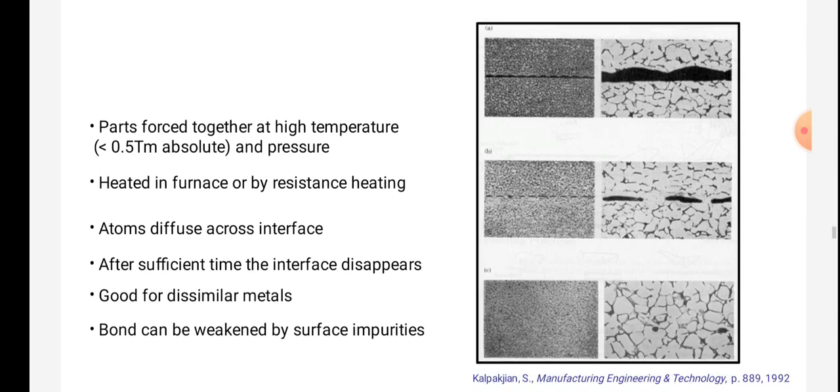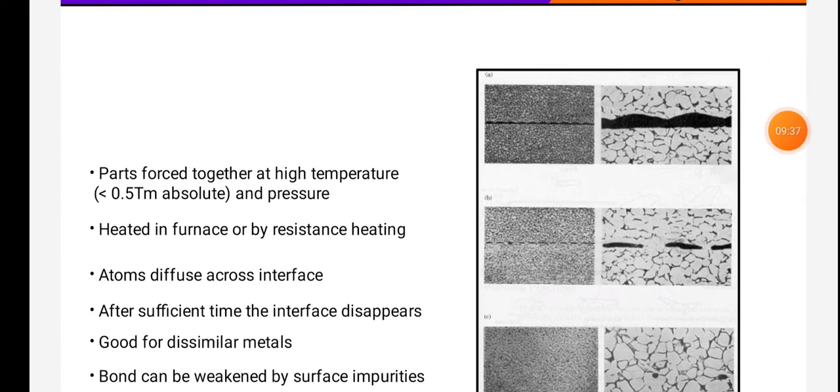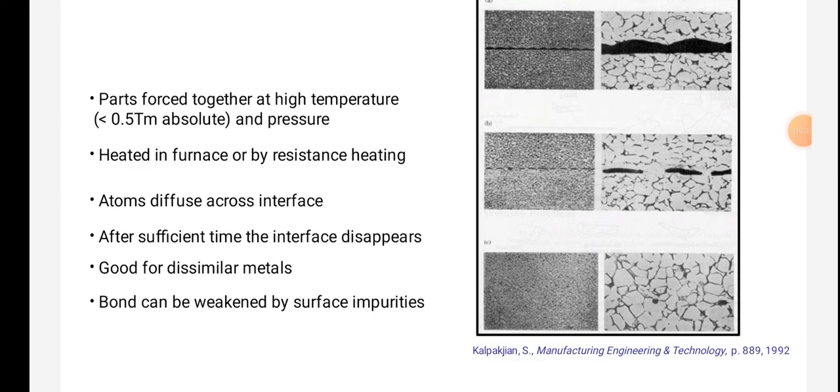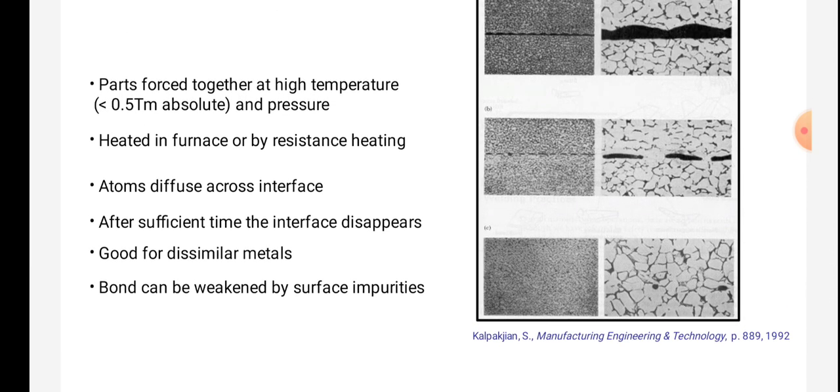Now we will see the diffusion welding as shown in figure. Parts forced together at high temperature and pressure, heated in furnace or by resistance heating. Atoms diffuse across interface. After sufficient time, the interface disappears. Good for dissimilar metals. Bond can be weakened by surface impurities. Thus we see the different types of welding in this session. Thank you.